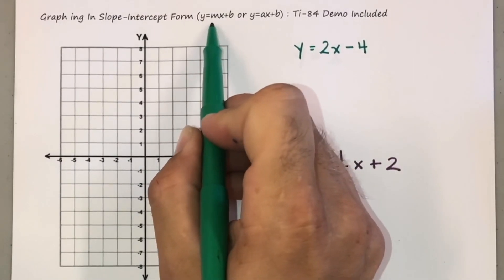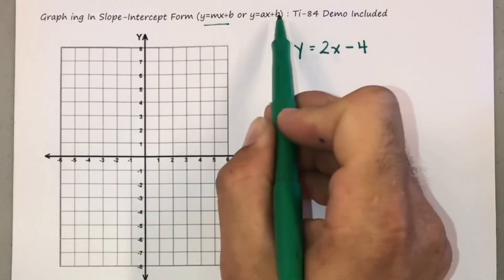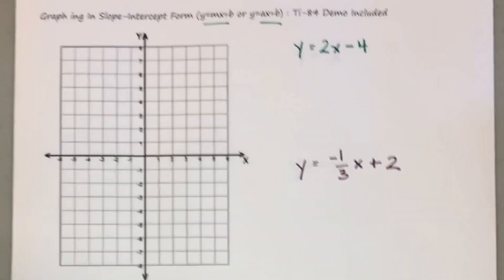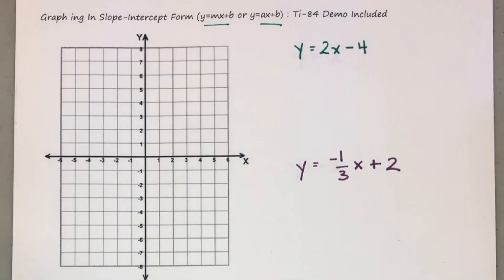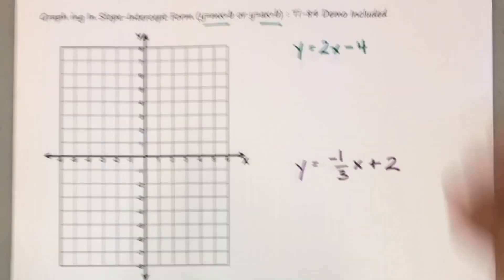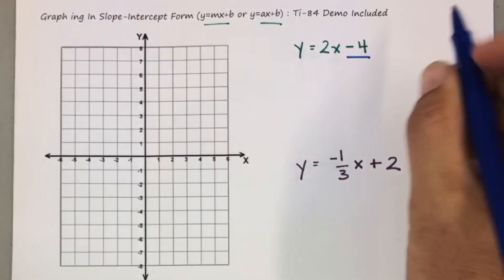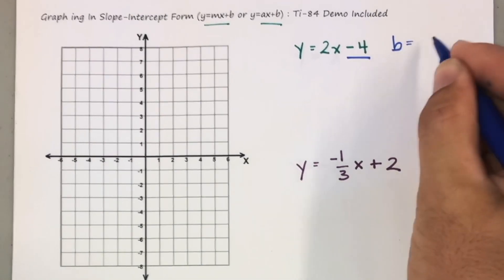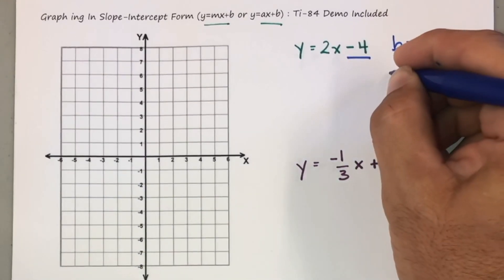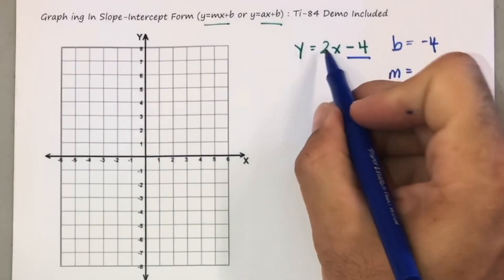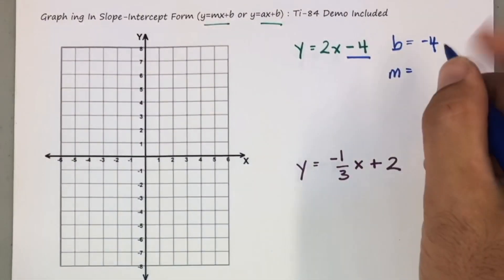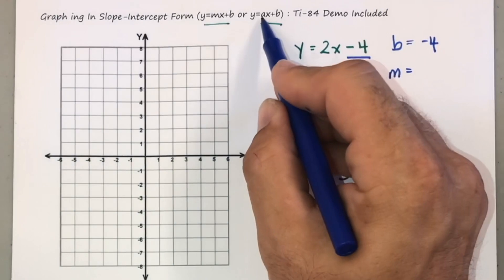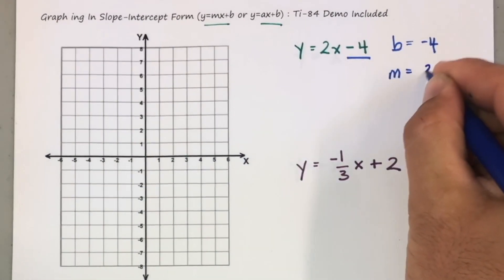You can see slope-intercept could take the form of y equals mx plus b, sometimes you'll see it as ax plus b. Basically you're looking at two pieces of information, one being the y-intercept or the b, which is the number not next to x, in this case negative four, and your slope, which is the number next to x, or your m, and you may see it as a sometimes, in this case being two.